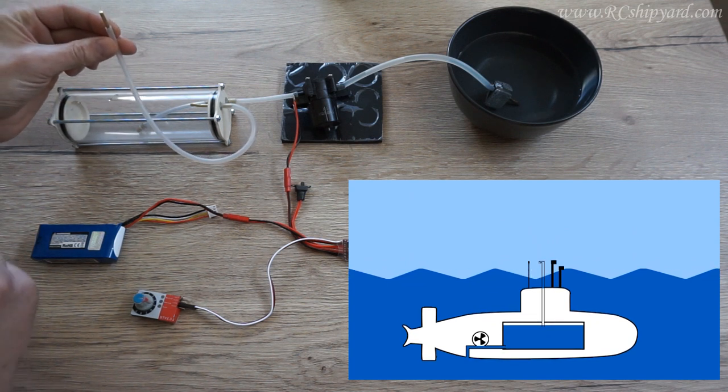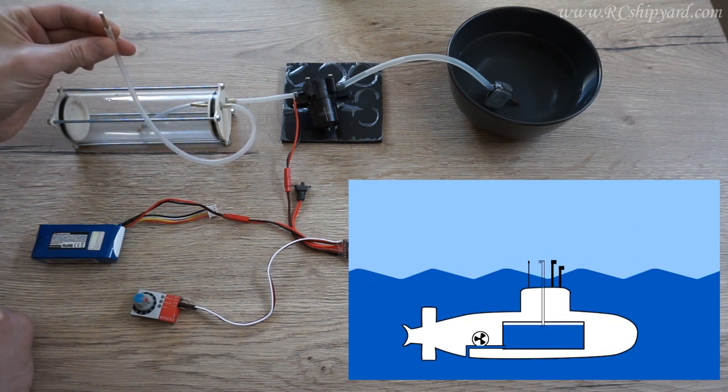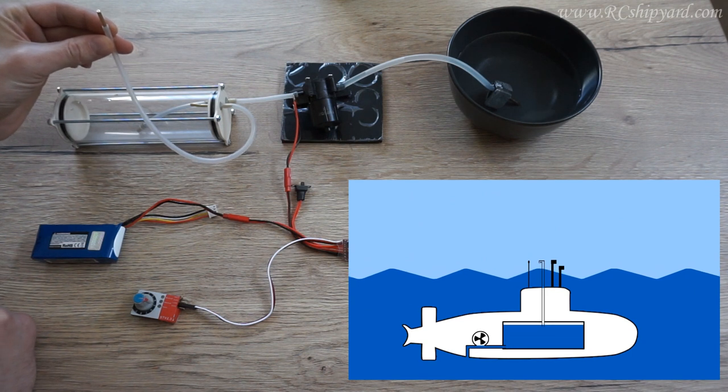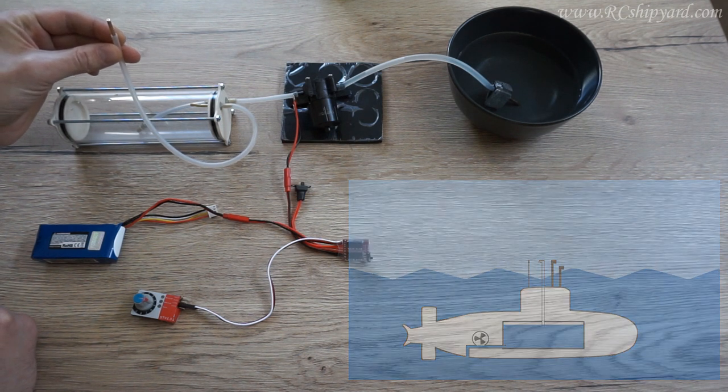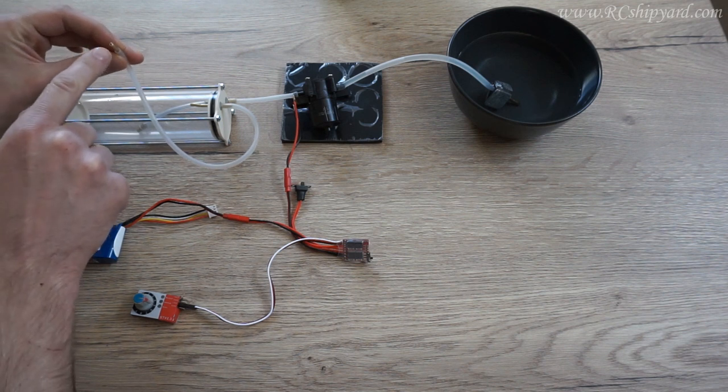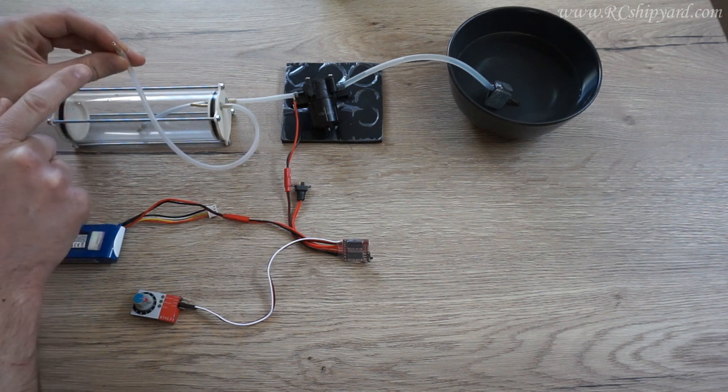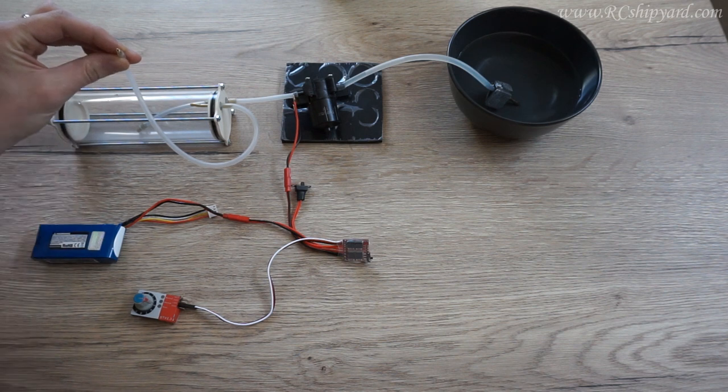The snorkel is a thin tube which should be hidden somewhere between the periscopes and the antennas on the model's tower. It should have a very thin hole. This one in particular is only one millimeter in diameter.